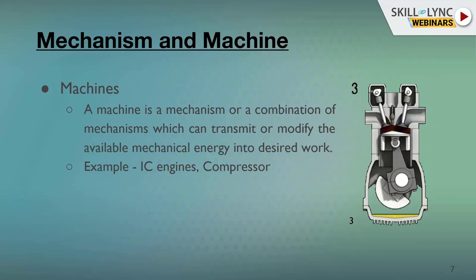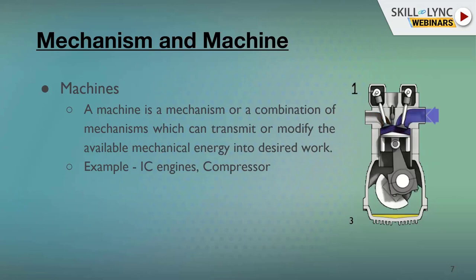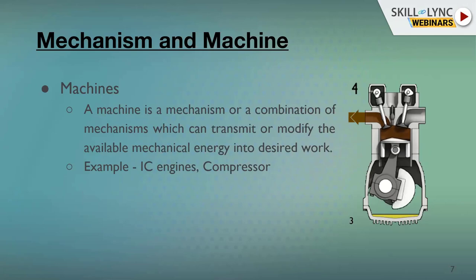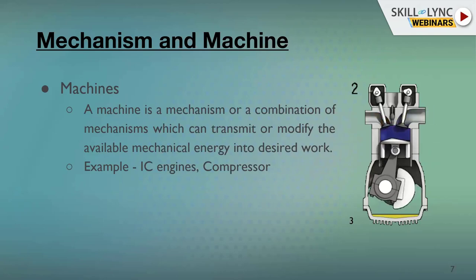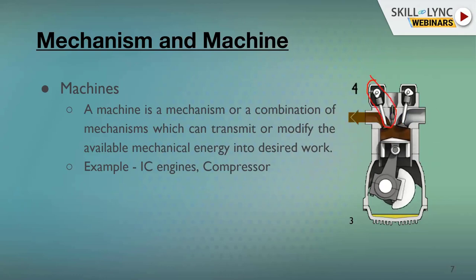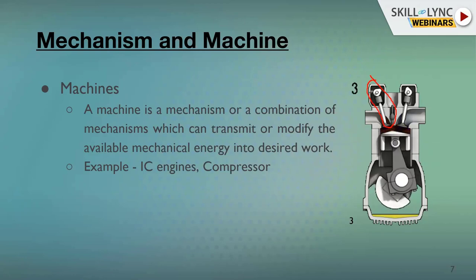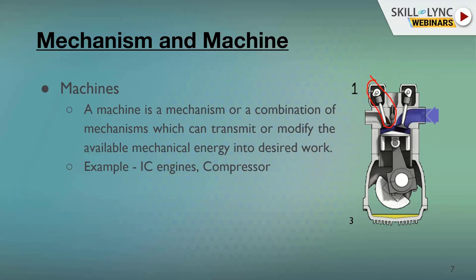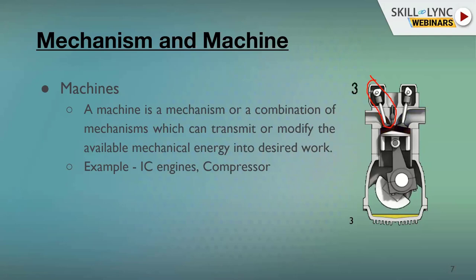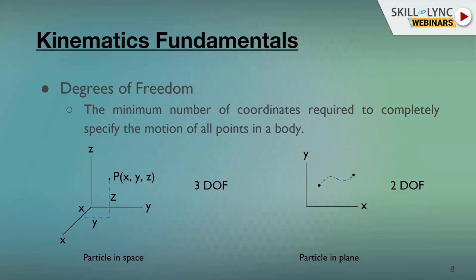In the animation of an IC engine, several mechanisms are involved. The basic building block is the slider-crank mechanism: the piston is the slider, the crank makes a complete rotation, and the connecting rod is the third link. This machine also contains a cam-follower mechanism, designed so that at a particular time it opens the valve and at another time it closes the valve. Thus a single IC engine contains several mechanisms.